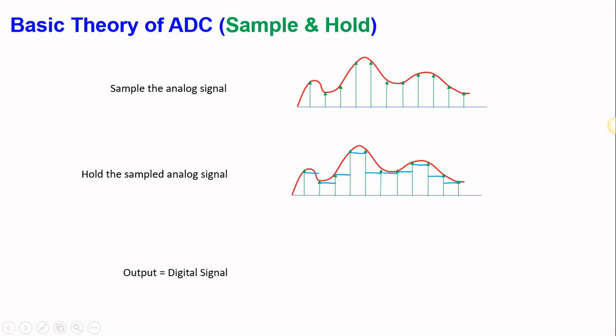When the sample and hold circuit has completed its operation, the output is the digital signal. The sampling captures the amplitude at a certain time, while the hold circuit maintains the state of that amplitude until the next sampling pulse. With this combination, you get the digital signal output.